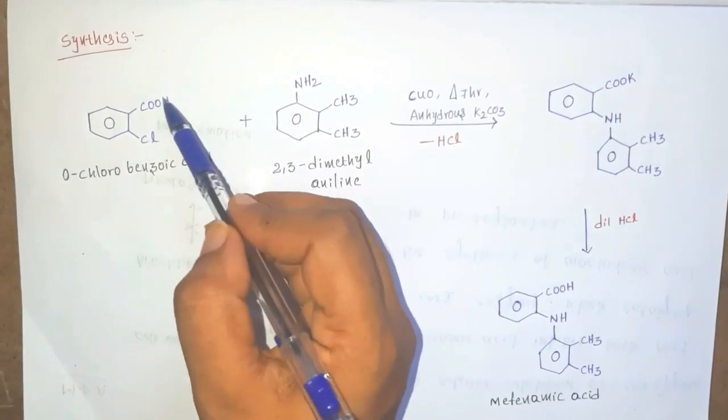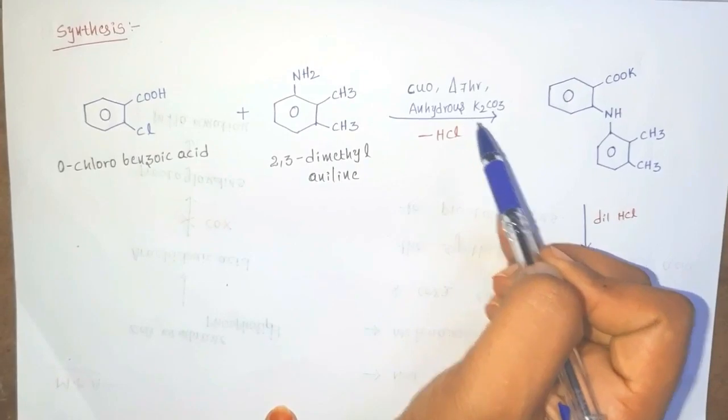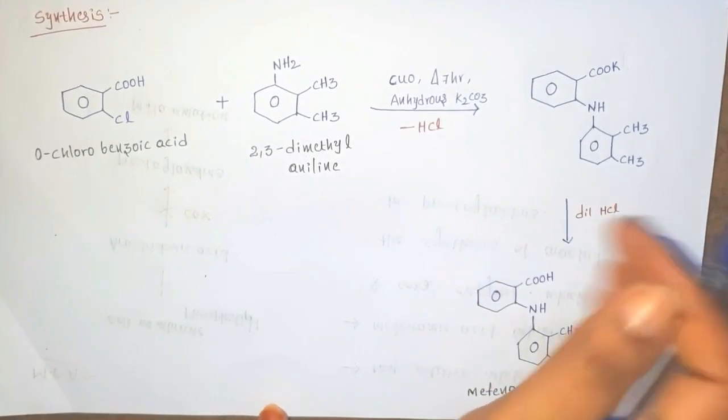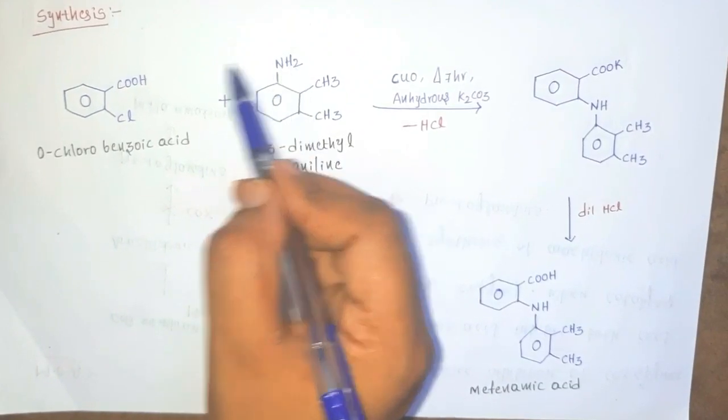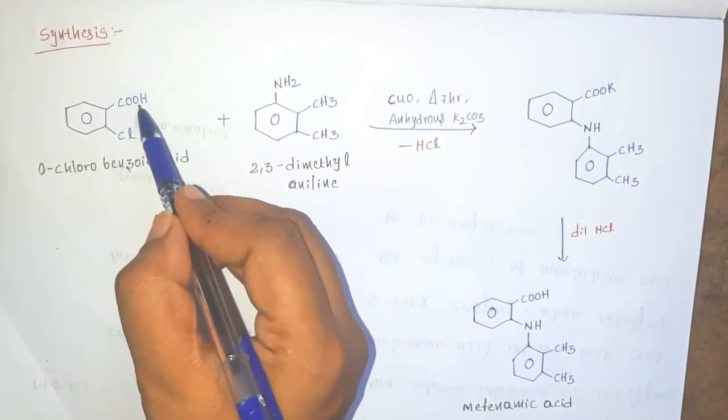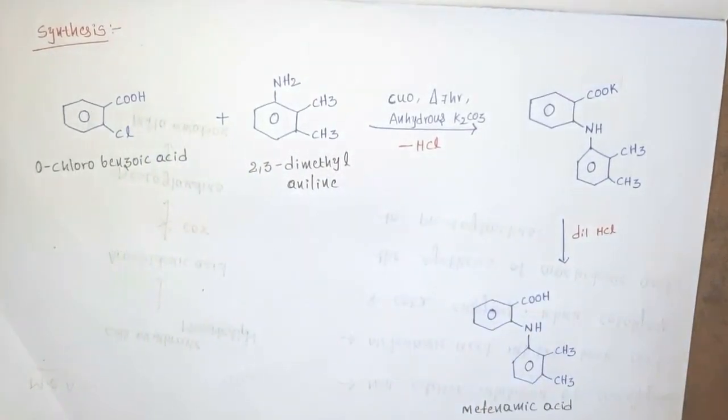So finally this nitrogen is directly attached to this position, and this hydrogen is replaced with potassium, and finally forms an intermediate compound.